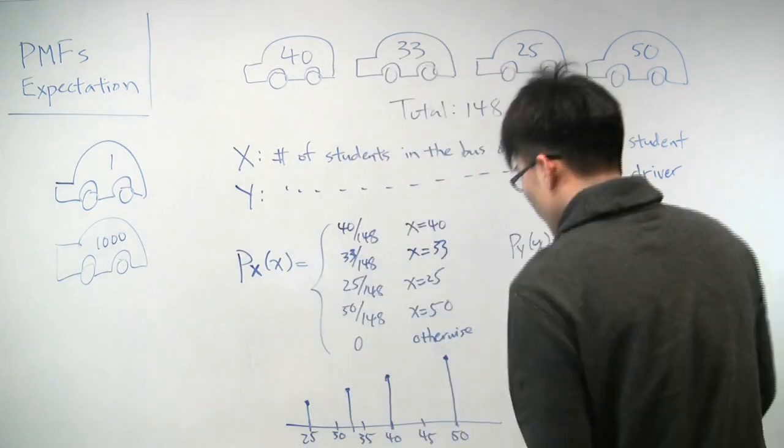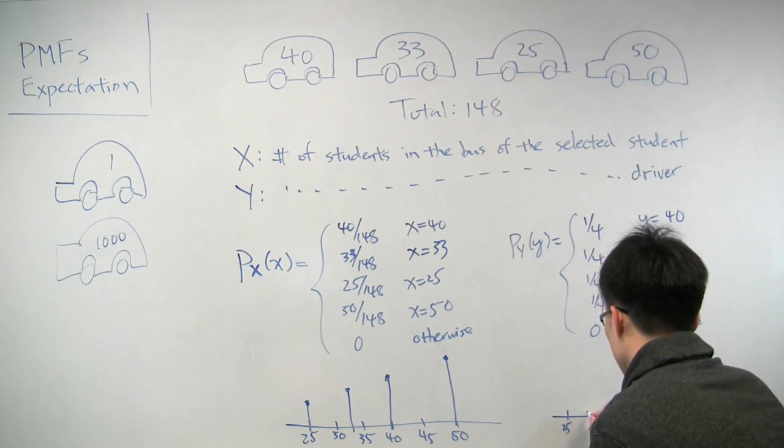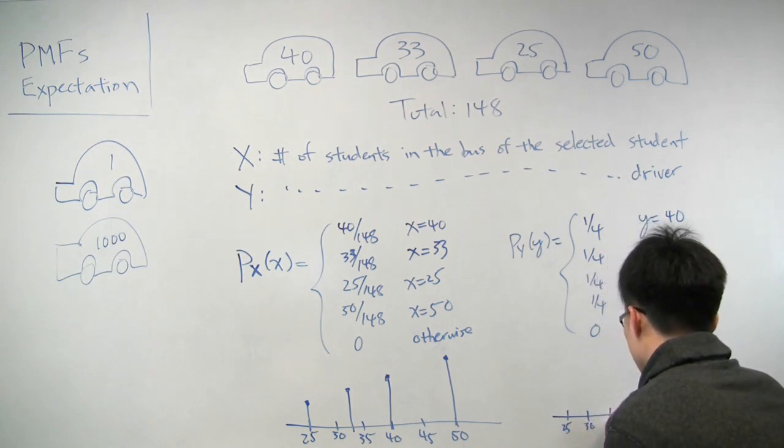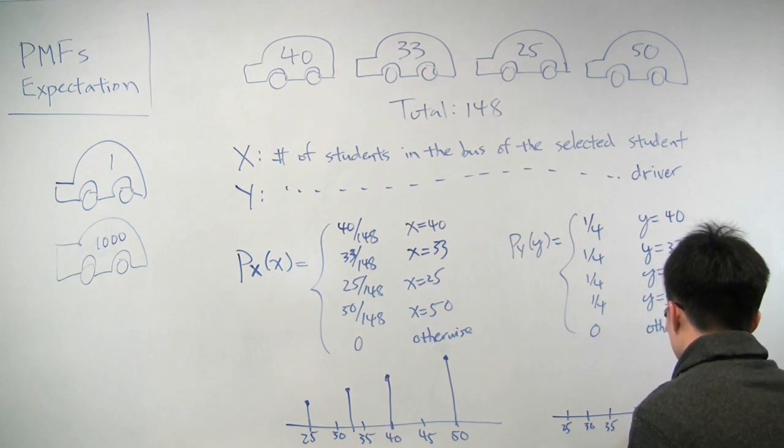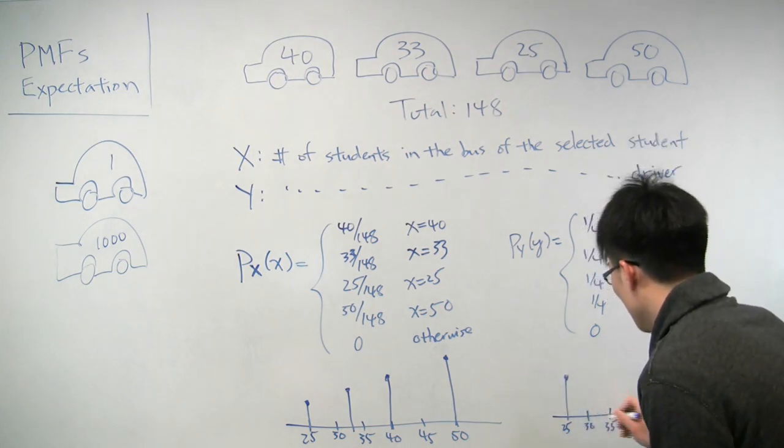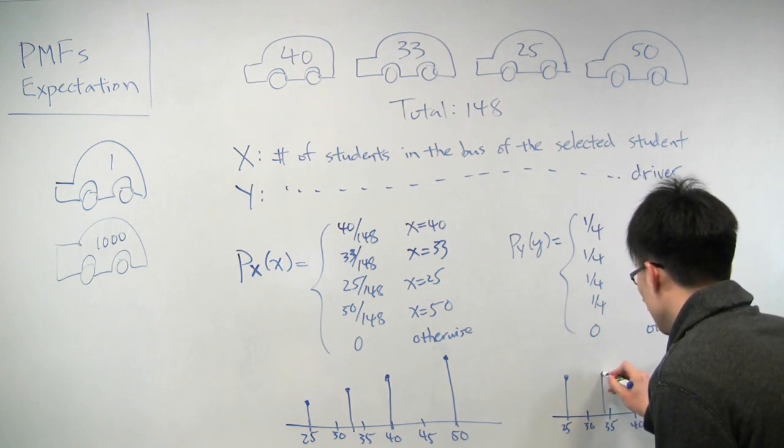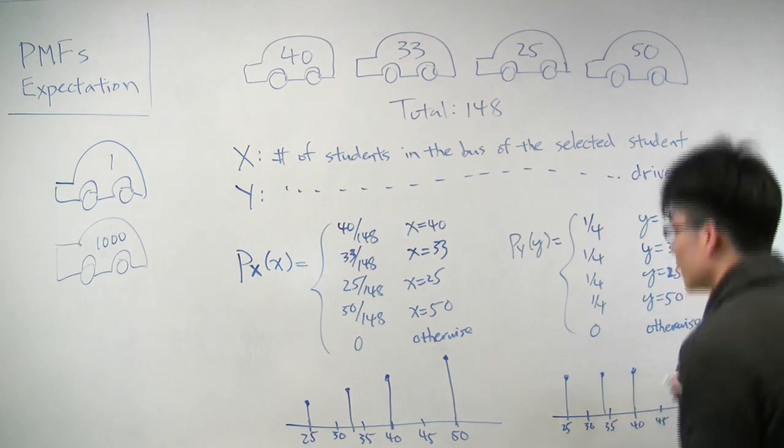And we can do the same thing for y, and we'll notice that there's a difference in how these distributions look. So if we do the same thing,